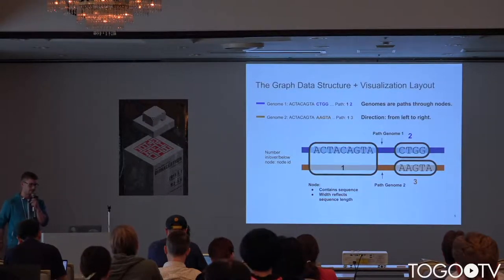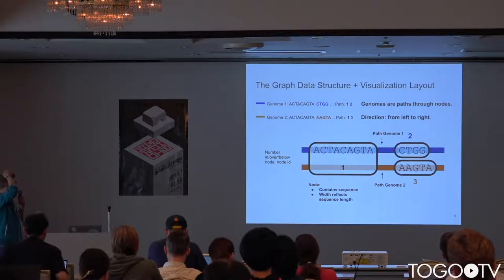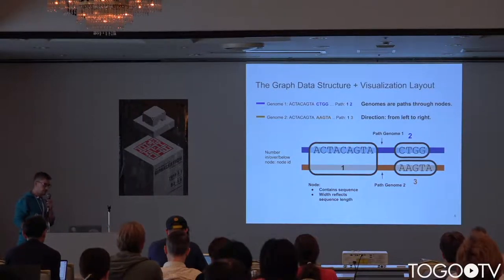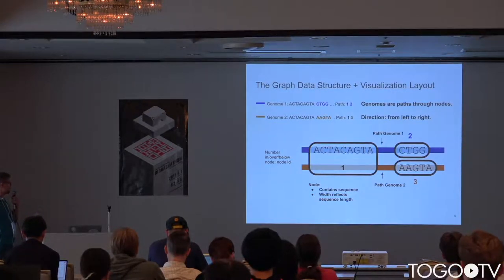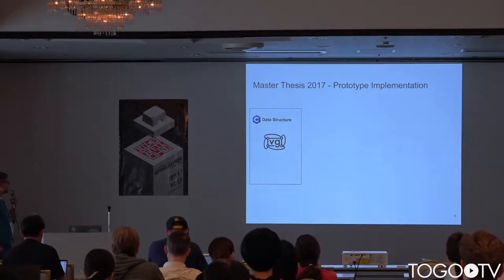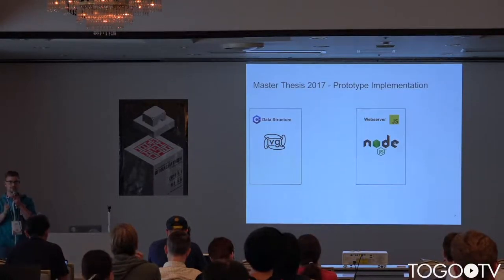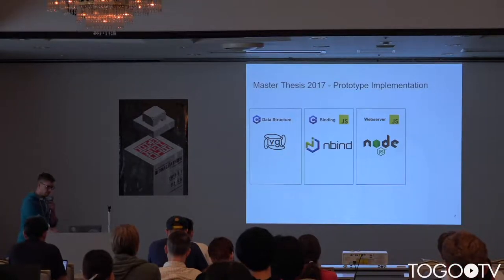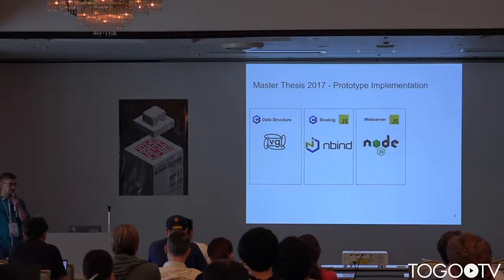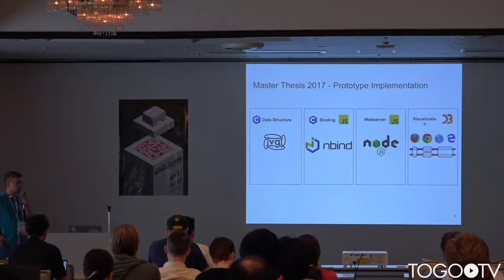So I tried to tackle that in my master thesis. Just to remind you, the data structure and visualization: when two genomes share the same sequence, they go through the same nodes, and when they have a different sequence, they traverse through different nodes. Nodes reflect the sequence length displayed. In my prototype, I used VG as the data structure, Node.js as the web server, and Nbind to connect both as an interface, enabling a high-performance implementation so that subgraphs can be shipped very fast to the client. On the client side, I used sequence tube maps for visualization.